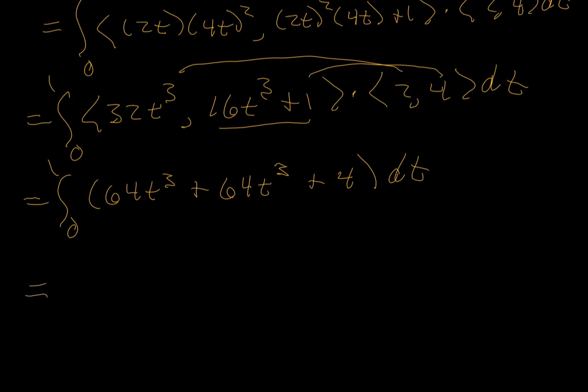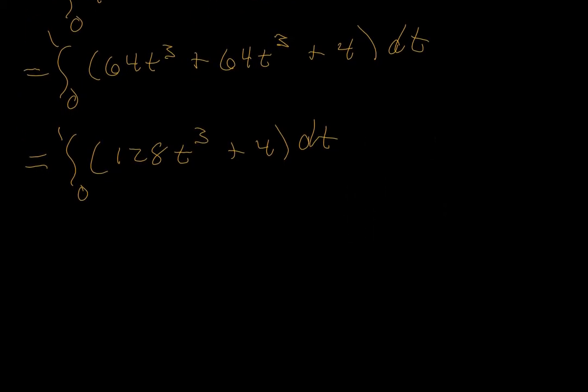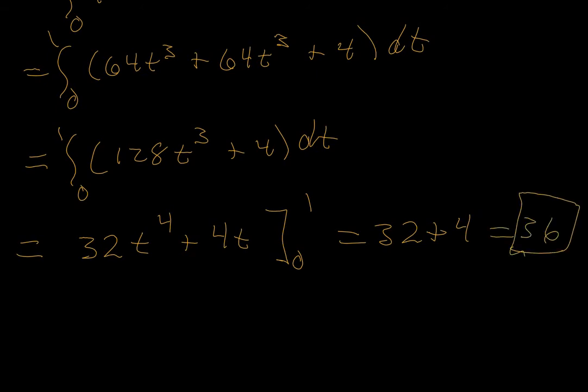Let's combine some terms. Integral from 0 to 1, 128t³ plus 4, and the antiderivative is going to be 32t⁴ plus 4t evaluated from 0 to 1. This will give us 32 plus 4 which is 36. And if this is a physics problem the units of measurement might well be in joules.